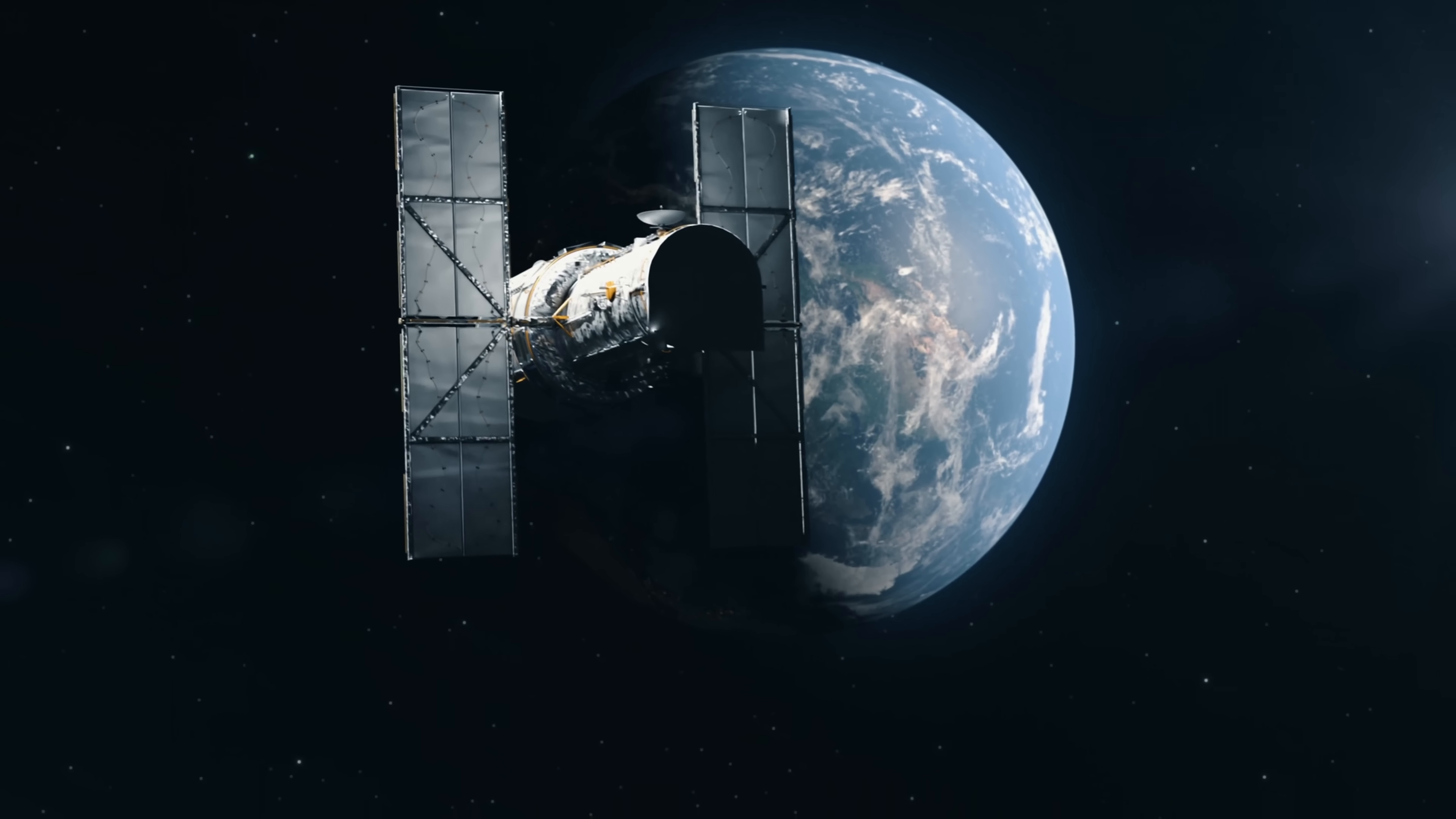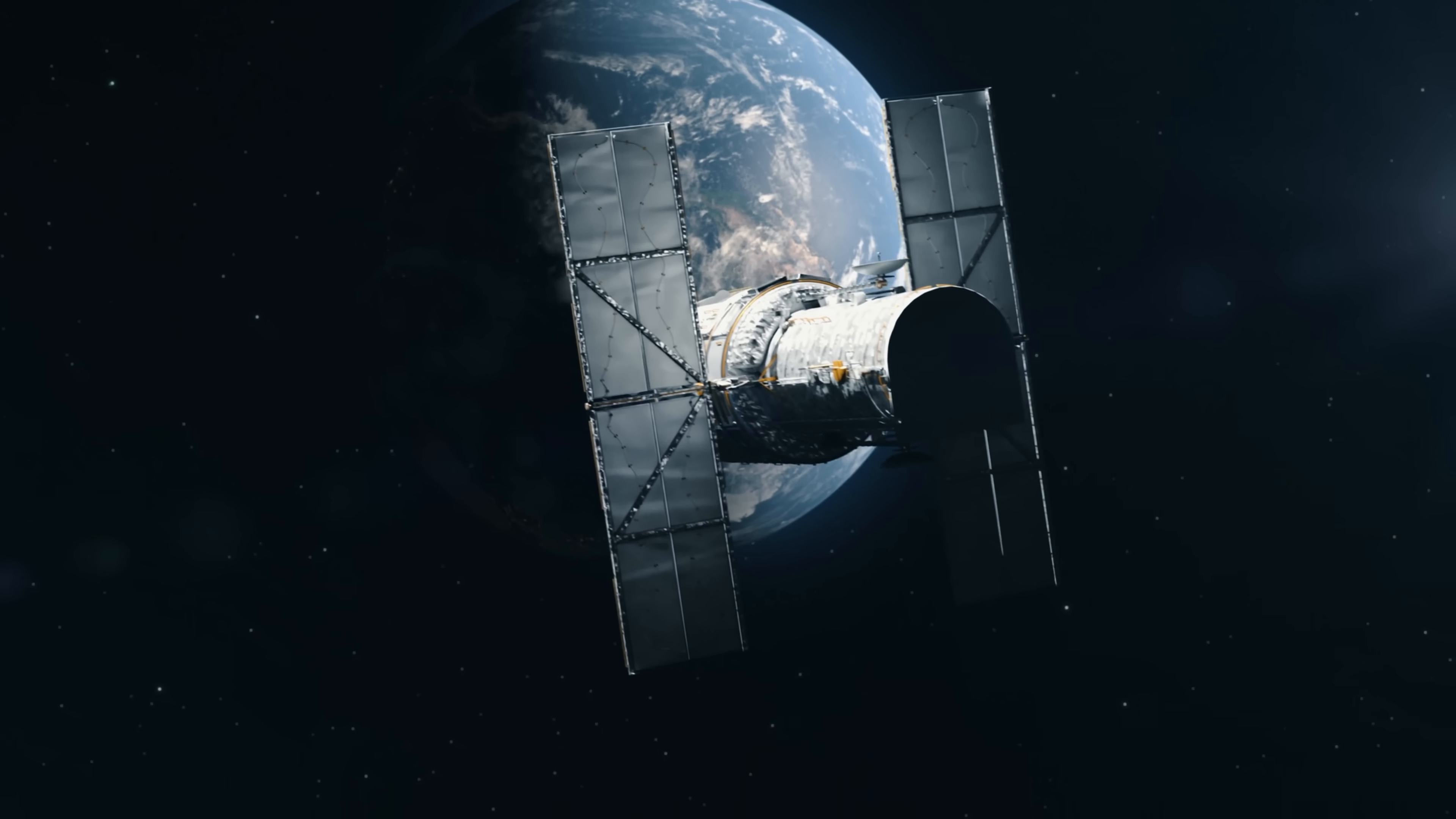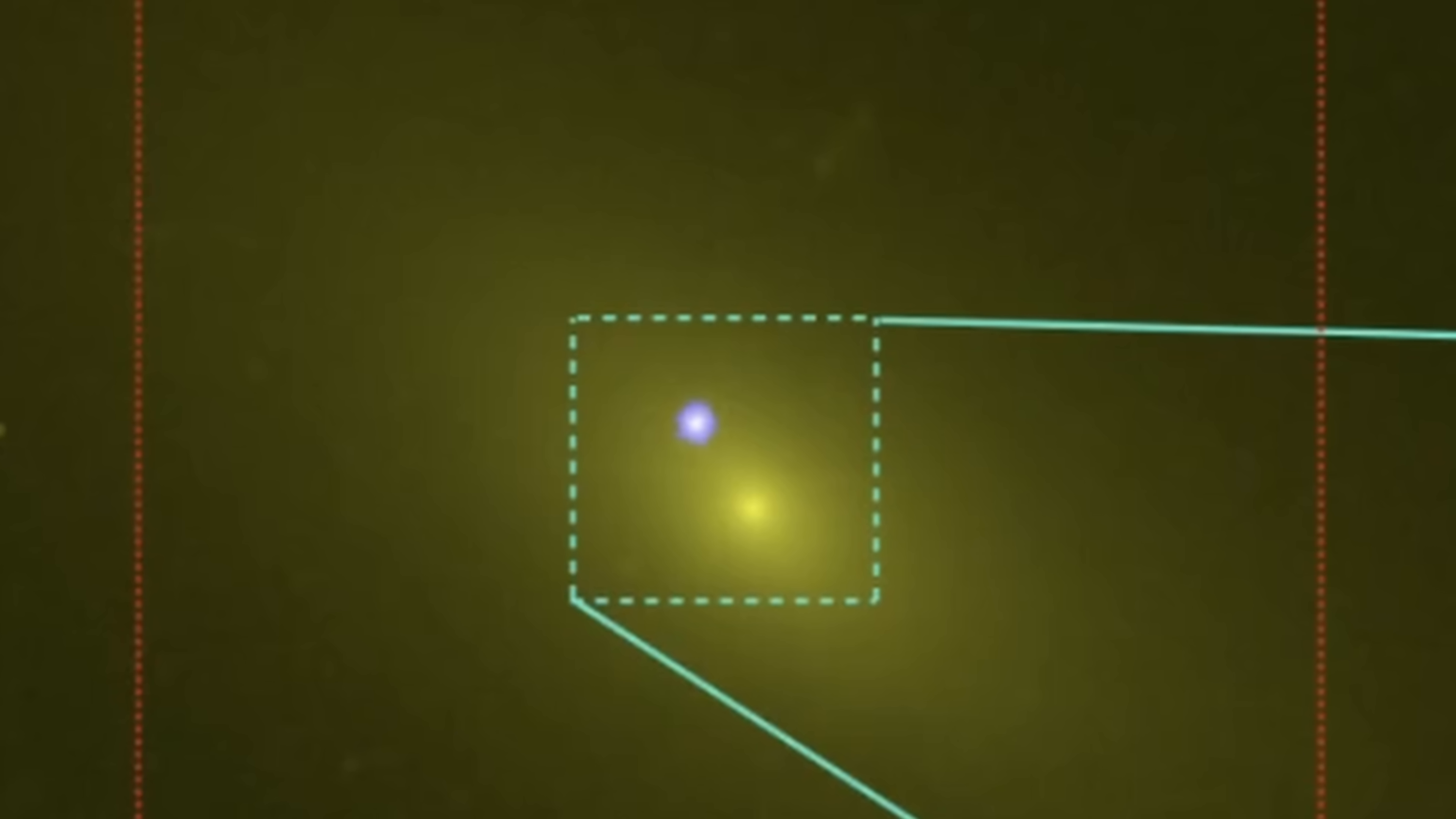But here once telescopes like Hubble, Chandra and the very large array started to look at this, they seem to have discovered something entirely different. Because strangely enough this TDE was not in the center of the galaxy and the center seemed to also contain another black hole.